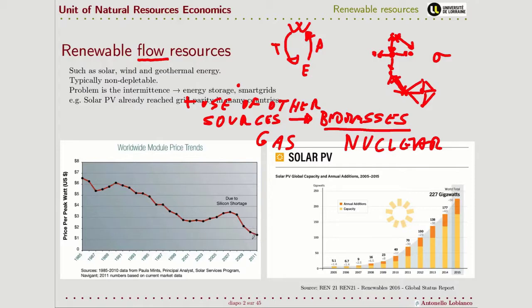This is reflected by an exponential increase. You can see in this chart that both the installed capacity and the annual addition of capacity of solar photovoltaic panels have grown exponentially. Photovoltaic is the king in terms of growth among the renewables.